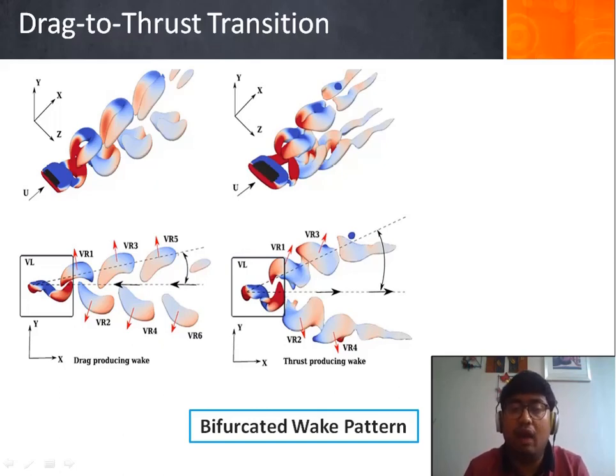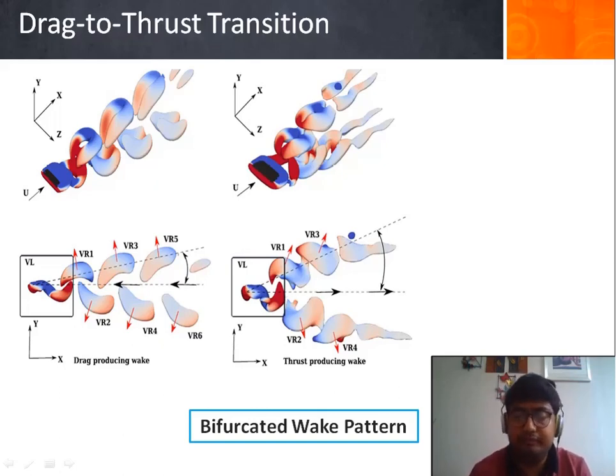In the near field vortex region we see an immediate vortex loop which is composed of leading edge vortex, the tip vortices and the trailing edge interlocking structure. It should be noted that this 3D wake pattern is very stable as compared to the 2D cases. At KH equal to 2, a chaotic flow field has been presented in case of 2D, whereas in case of 3D we see a very stable bifurcated wake pattern.